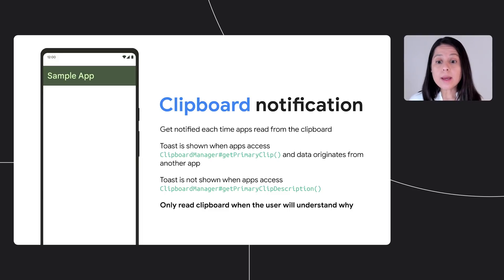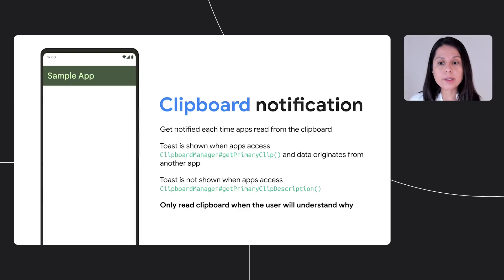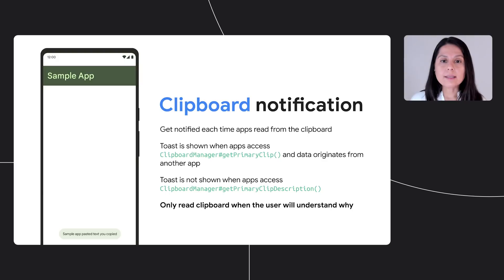We know how sensitive content copied to clipboard can be. Users frequently copy emails, addresses, and even passwords. Android 12 notifies users every time an app reads from their clipboard. Users will see a toast at the bottom of the screen each time an app calls Get Primary Clip. The toast doesn't show if clipboard data originates from the same app. You can minimize access by first checking Get Primary Clip Description to learn about the type of data in the clipboard. The recommended best practice is to only access clipboard data when the user understands why. Android 12 brings a new level of transparency that is revolutionary and necessary and will lead to greater trust with users. I'll now hand it off to Eric who will talk about how we're adding thoughtful controls to the platform to improve decision making.